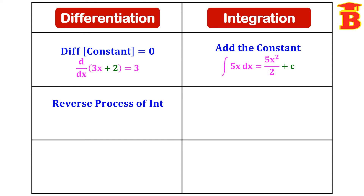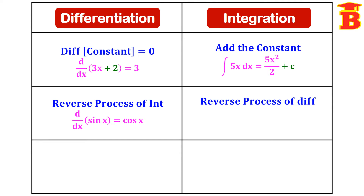Differentiation is the reverse process of integration. For example, d/dx of sin(x) equals cos(x). And if we integrate cos(x), we get sin(x). Similarly, integration is the reverse process of differentiation: integral of cos(x) dx is sin(x) + C. If we differentiate sin(x), we get cos(x). We can observe that differentiating sin(x) + C gives cos(x), since the differentiation of the constant is 0.